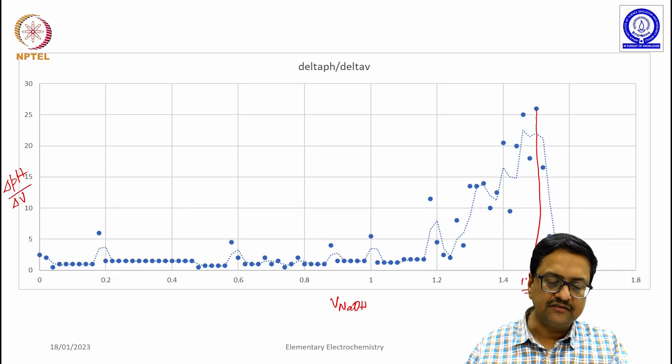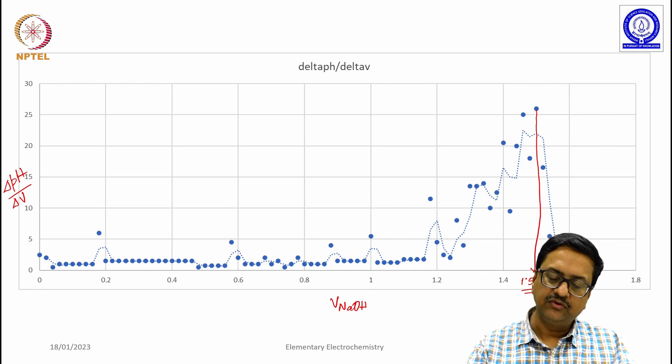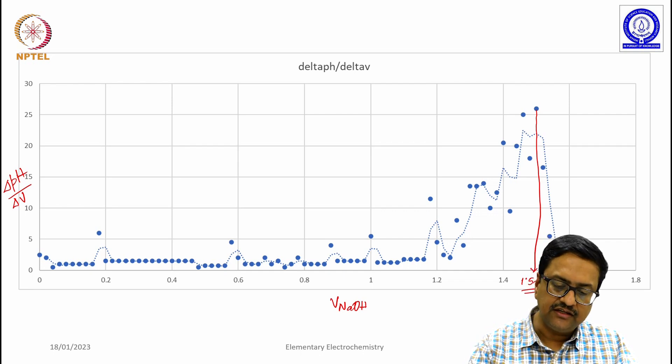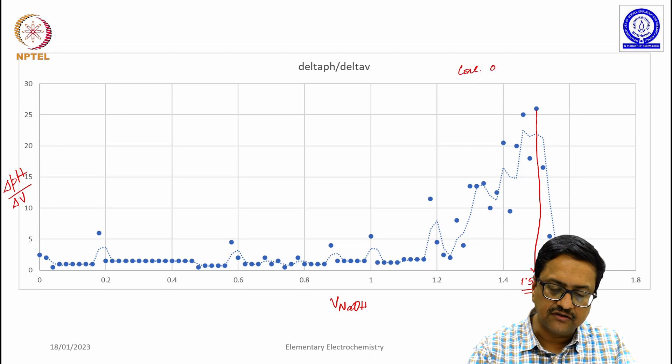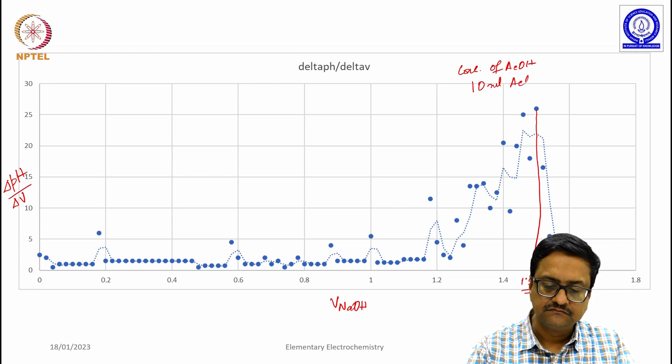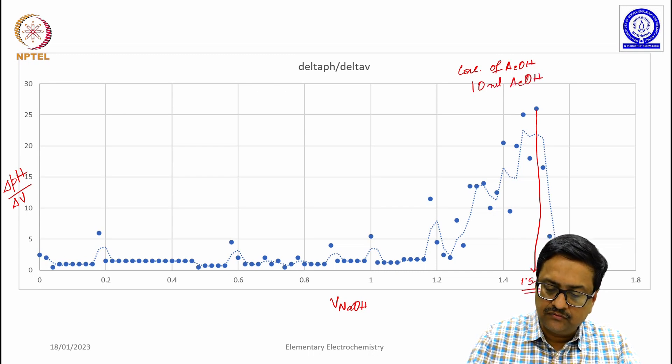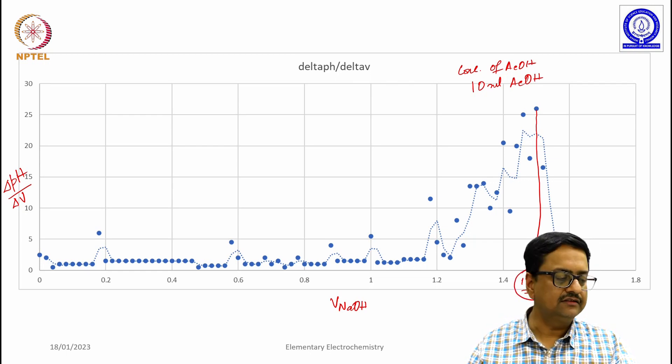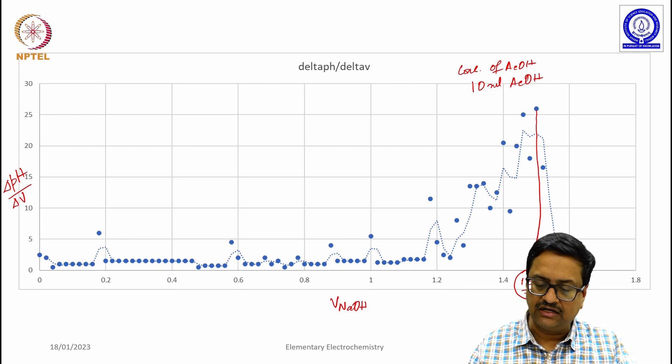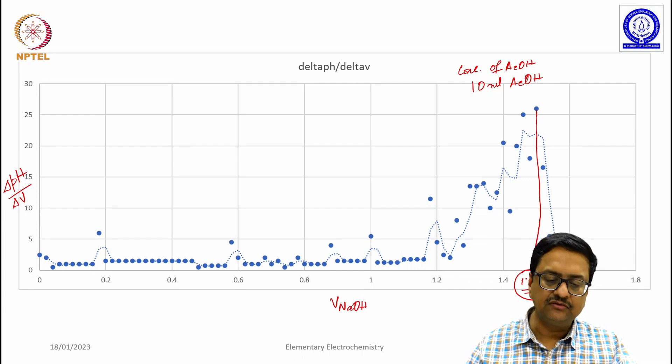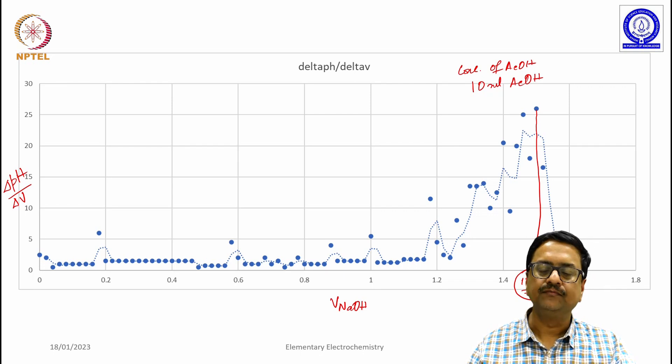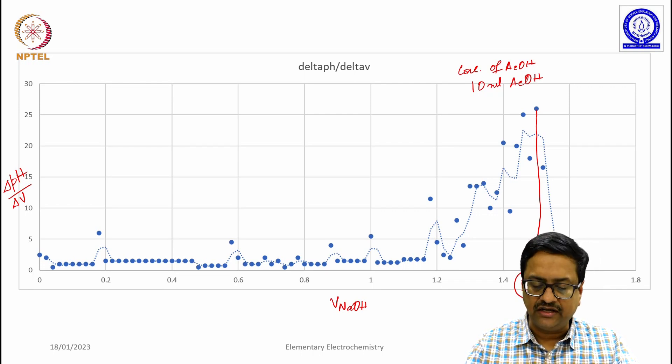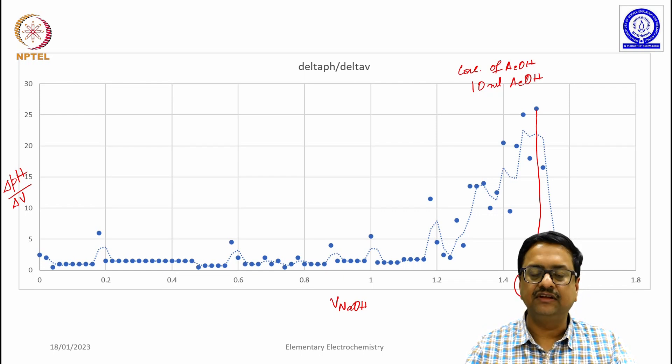So using the same method, you can calculate the concentration of acetic acid for which we had taken 10 ml of acetic acid. And for that we required 1.5 ml of NaOH of strength 0.0919 normal. So I am not going to do the calculation here for you. You will do the calculation and find out the number because that is very simple.